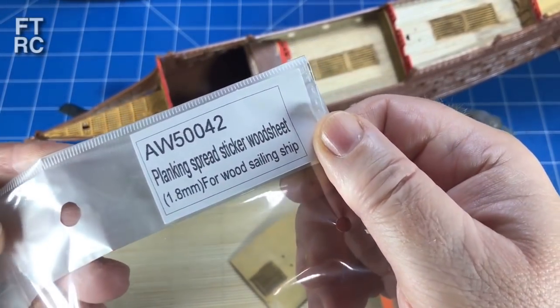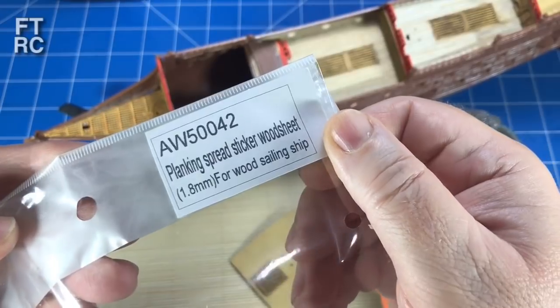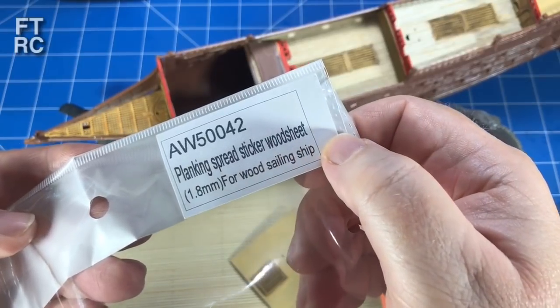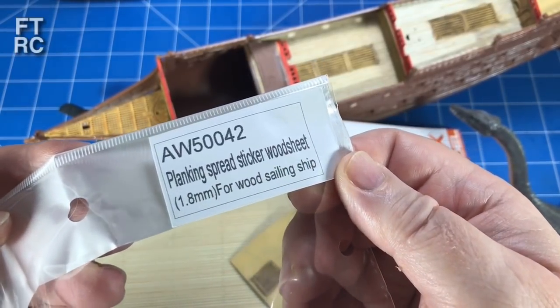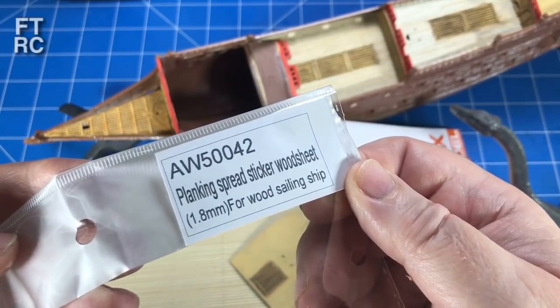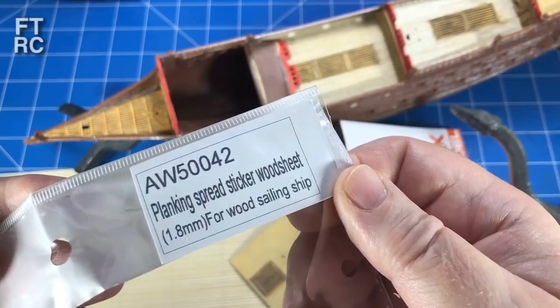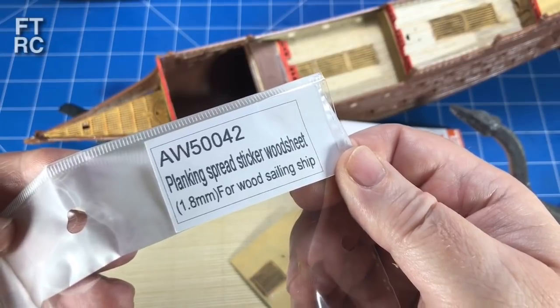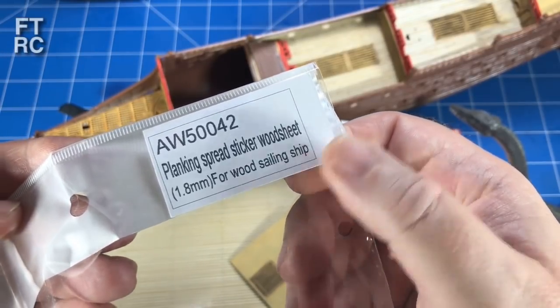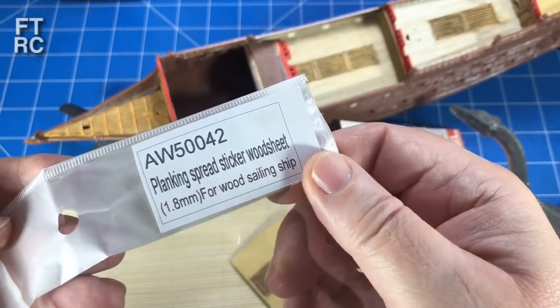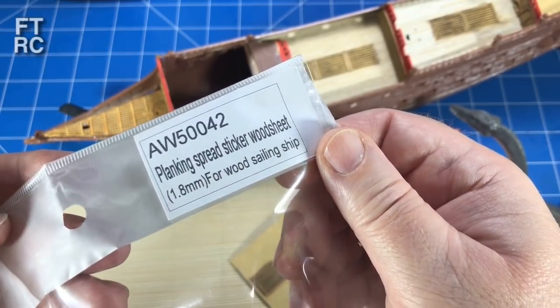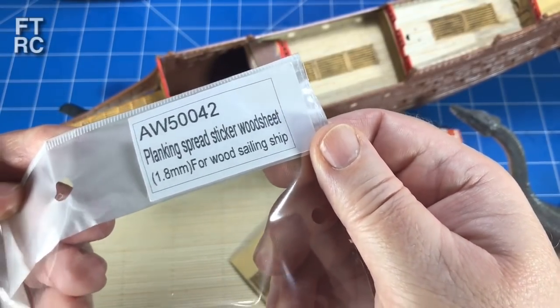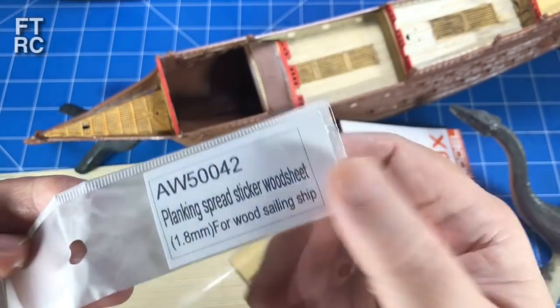Now, if you're trying to search for these planks online, they are available at BNA in Melbourne, Australia, but they come under a funny name: Planking Spread Sticker Wood Sheet. I came across these sheets when I was trying to find a solution for a better width plank for my Revell Batavia. I'm going to use these on every one of my plastic ships from now on. They are terrific.